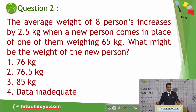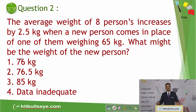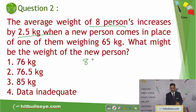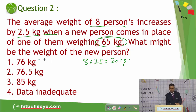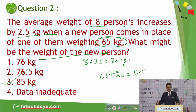The next question: the average weight of 8 persons increases by 2.5 kg. In most CET Maharashtra maths questions, you should solve at the first reading. Eight persons, 2.5 kg increase — total weight increase is 8 × 2.5 = 20 kg. When a new person replaces one weighing 65 kg, the new person's weight is 65 + 20 = 85 kg, which is the third option. If you are good at reading and logic, you can do most questions mentally.